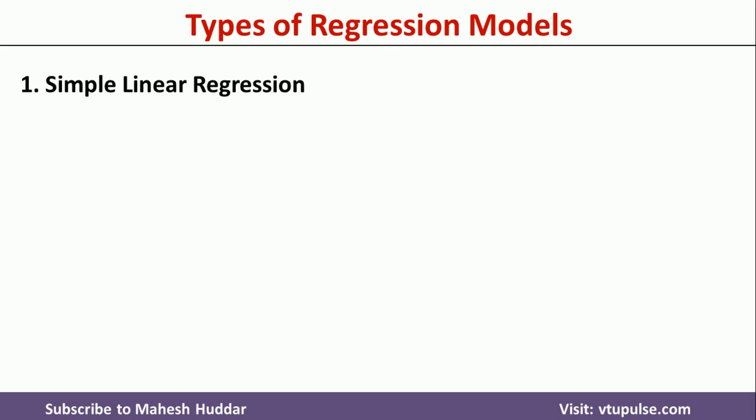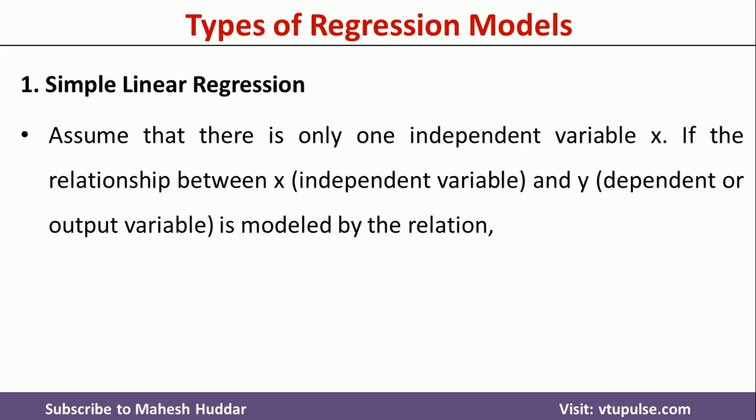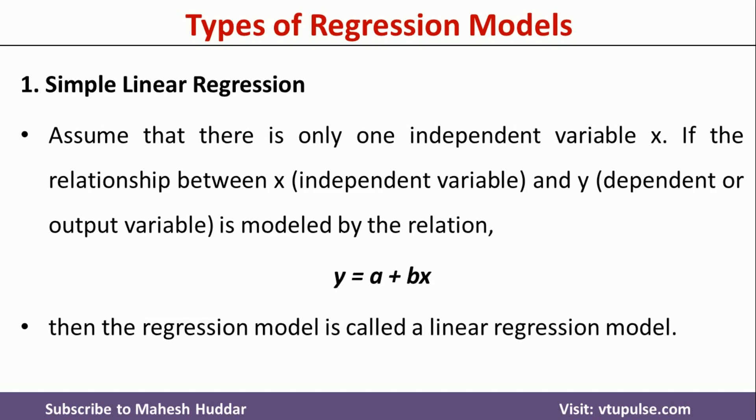Simple linear regression model: assume that there is only one independent variable x, and the relationship between x (the independent variable) and y (the dependent or output variable) is modeled by the relation y = a + bx. Then this relationship is called a simple linear regression model. We have one independent variable x, and if you know the value of x, we can easily predict the value of y.